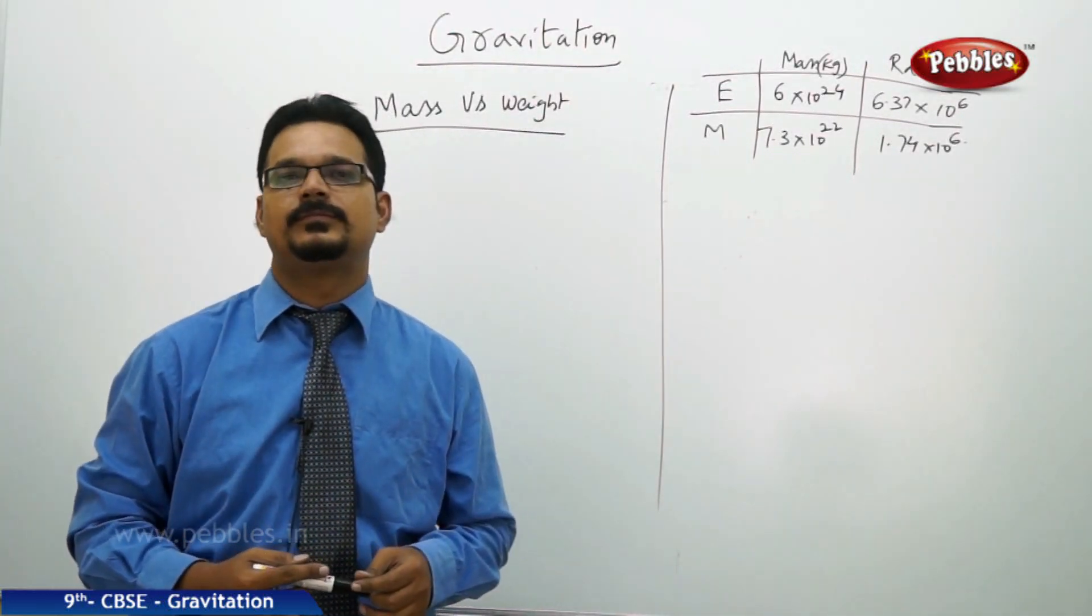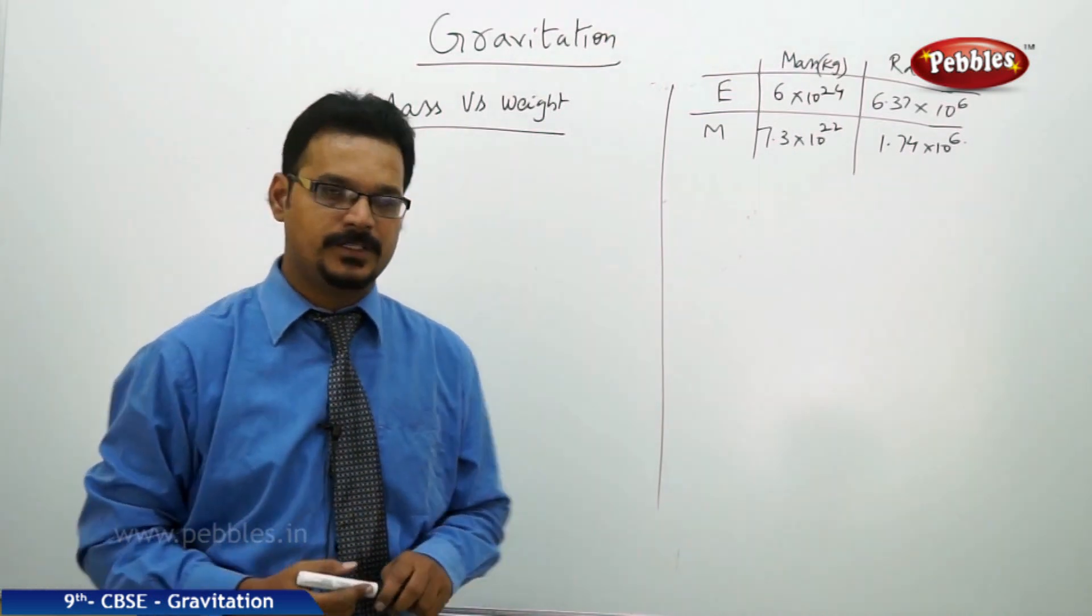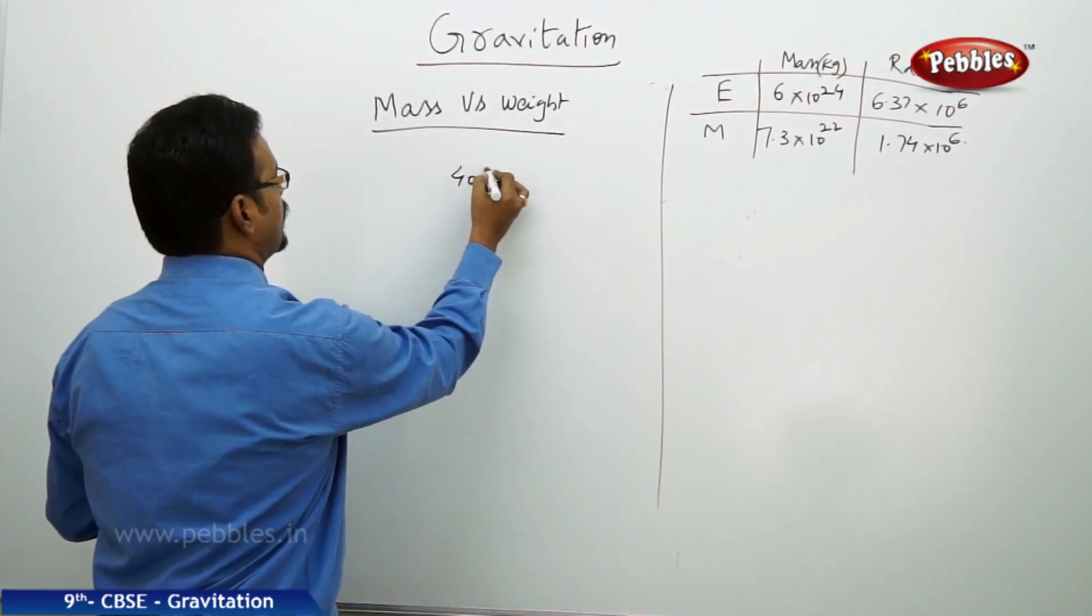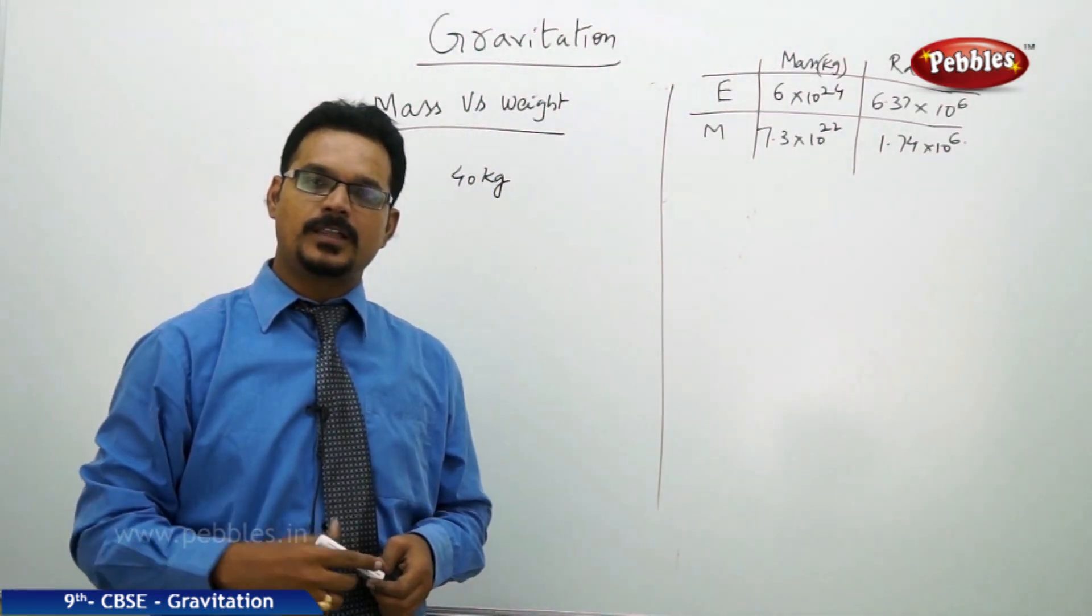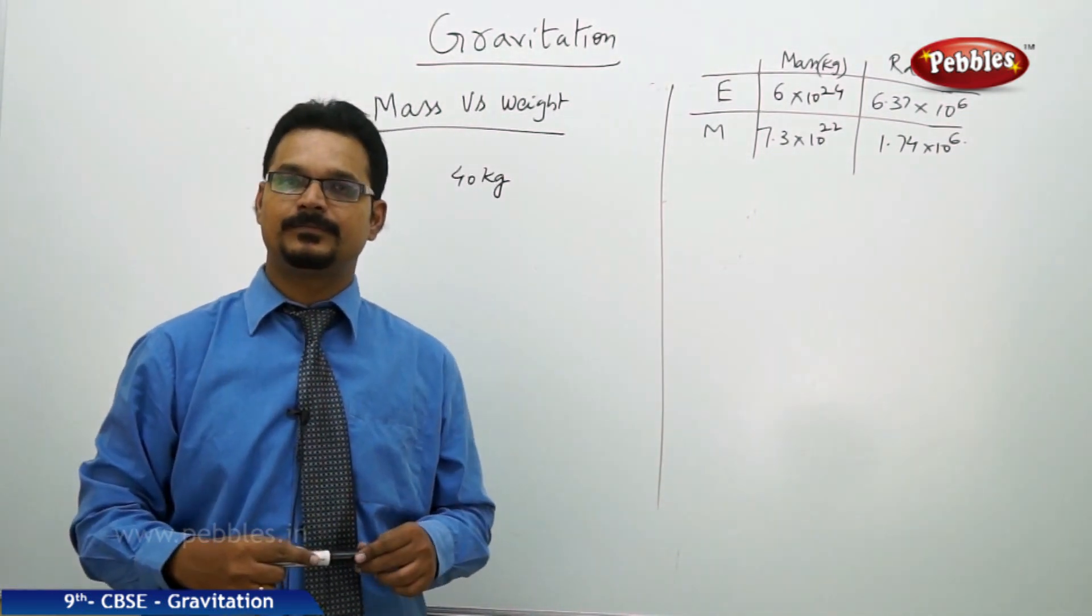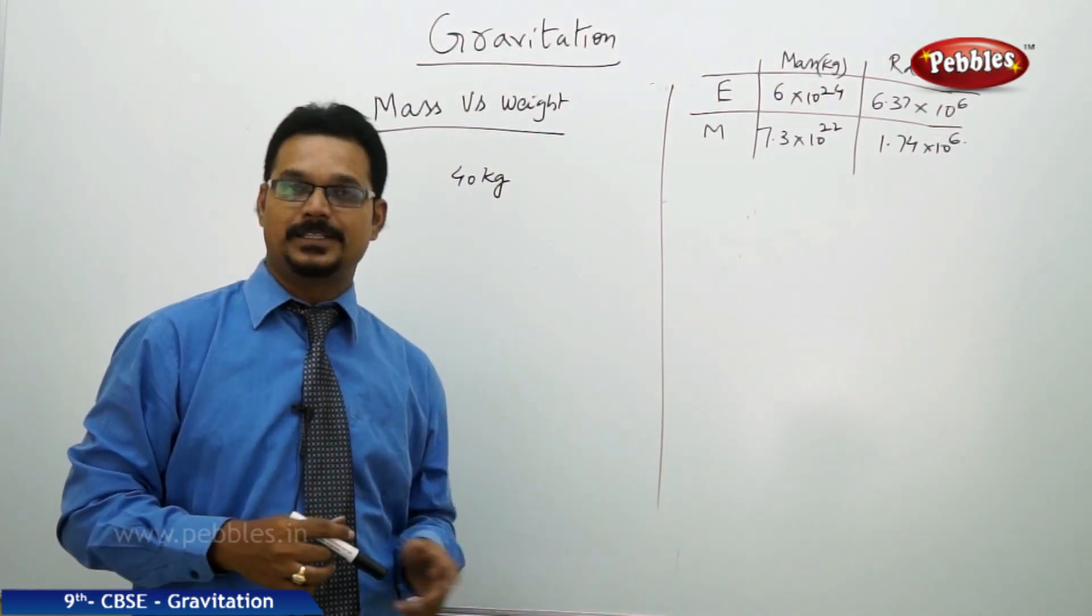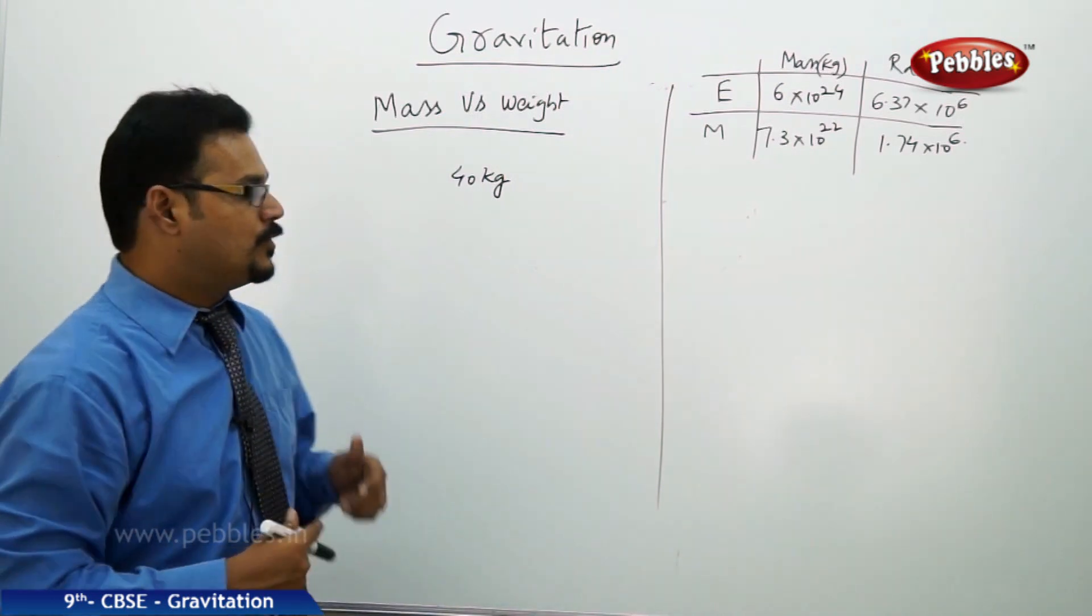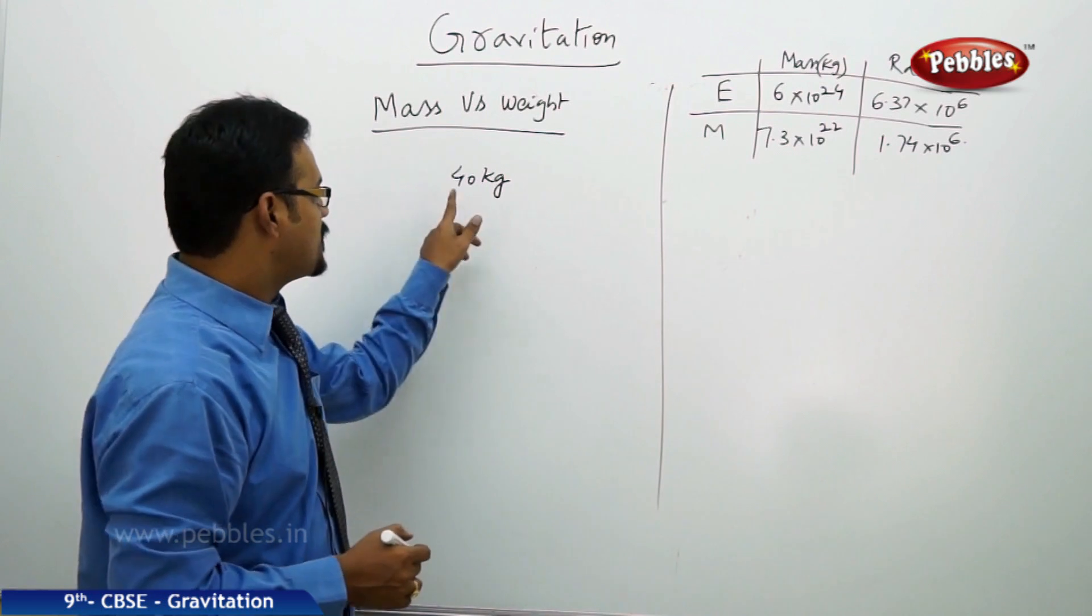If somebody asks you what is your weight and you answer my weight is 40 kg, is the answer you've given the right answer? Are you giving the actual weight or something else? Yes, here's a confusion: you said my weight is 40 kg, but when you mention 40 kg, it is a unit of mass. That means you're thinking you're giving the weight value, but you're actually giving the mass.